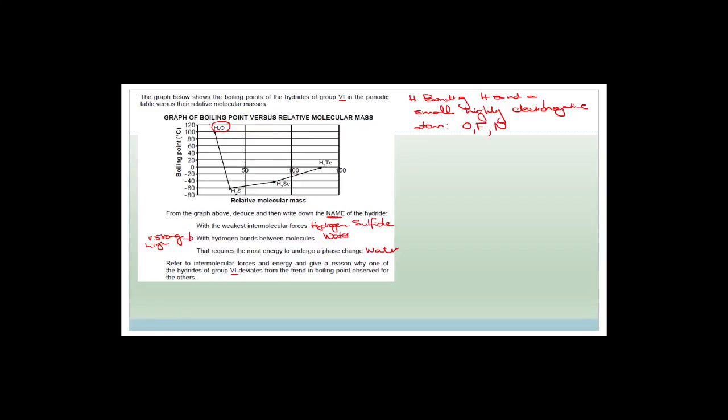It says refer to intermolecular forces and energy and give a reason why one of the hydrides in group six deviates from the trend in boiling point observed in the others. What they're really asking is to explain why water deviates, because all the others follow a beautiful trend — hydrogen sulfide and the rest going up in roughly a straight line from about minus 61 up to zero — but water sits at a boiling point of 100 degrees, clearly deviating from the trend.